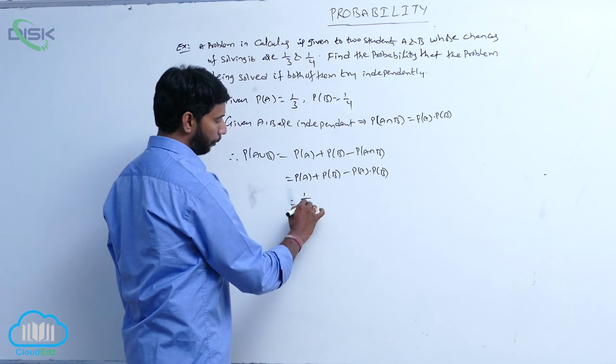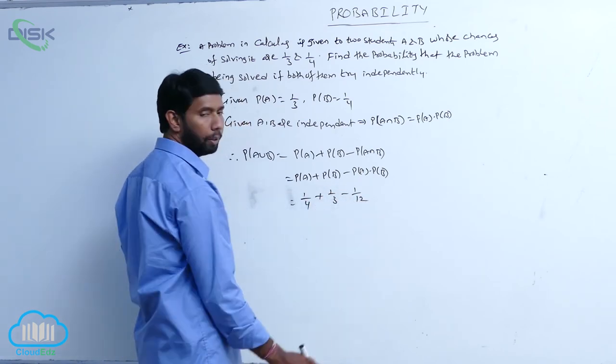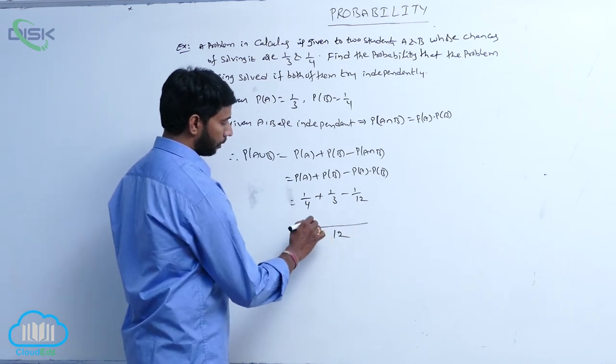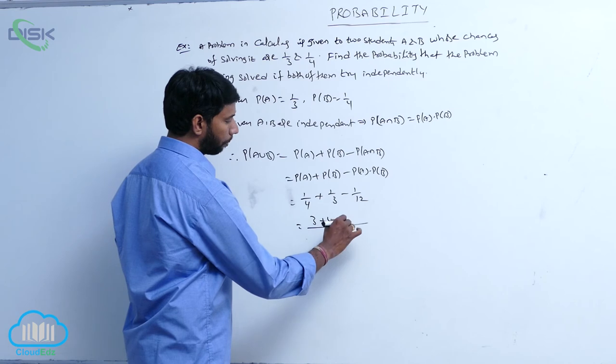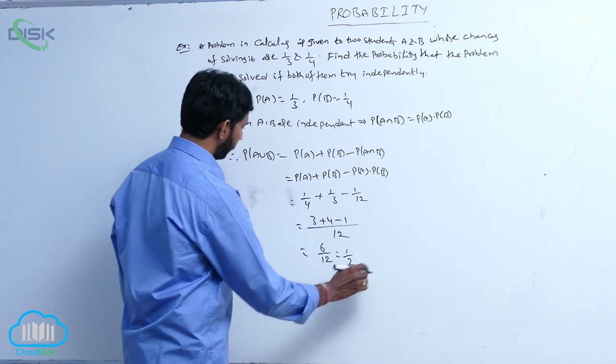It is equal to 1 by 4 plus 1 by 3 minus 1 by 12. 1 by 4 into 1 by 3. Here, taking LCM, LCM is 12, that is 3 plus 4 minus 1, that is equal to 6 by 12, that is equal to 1 by 2.